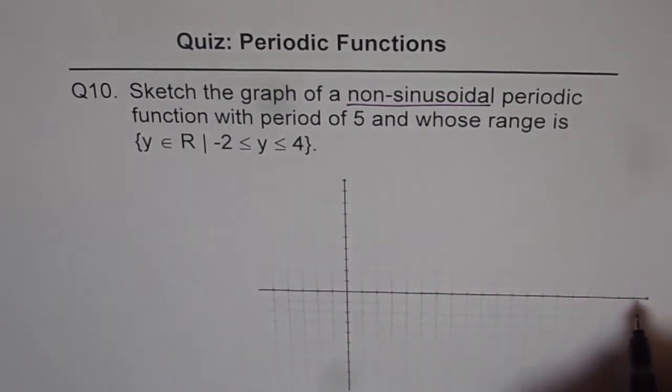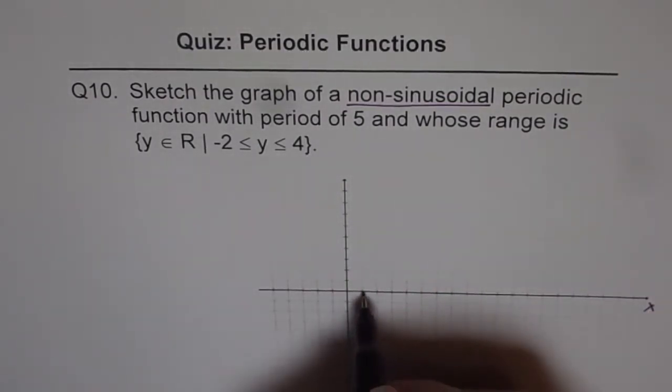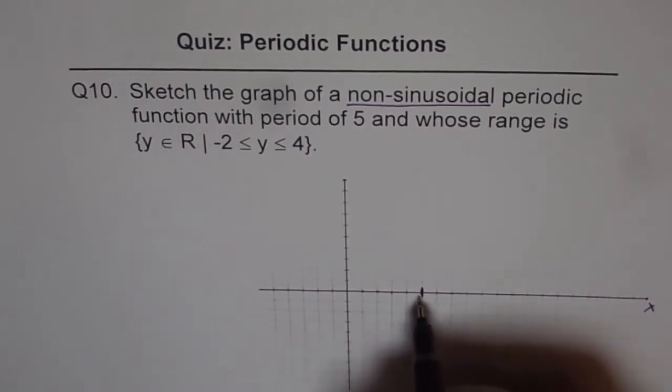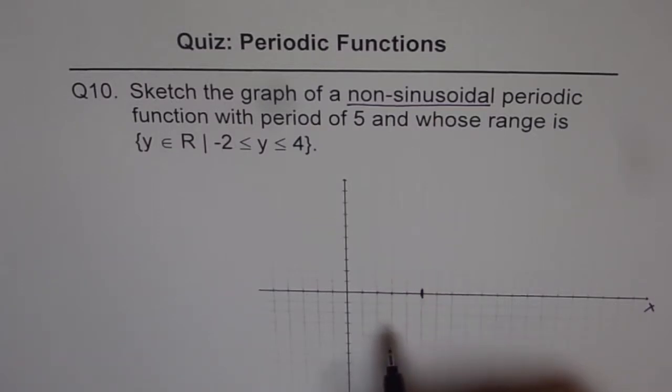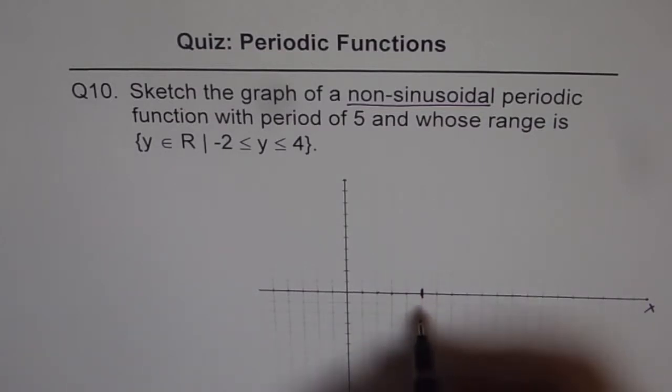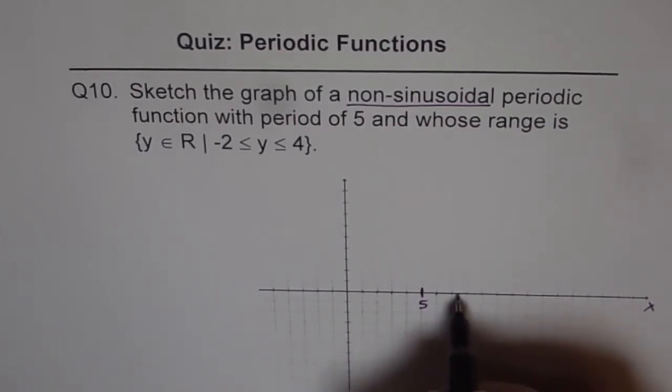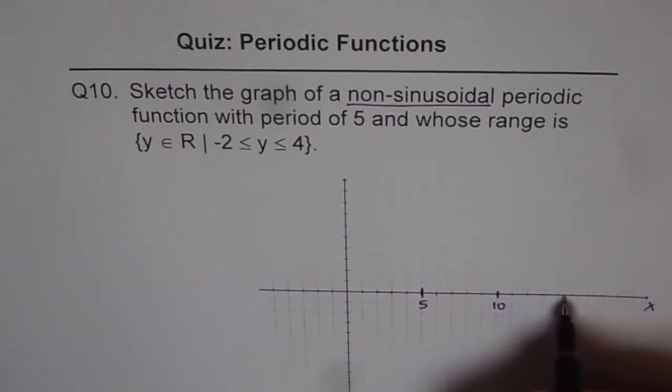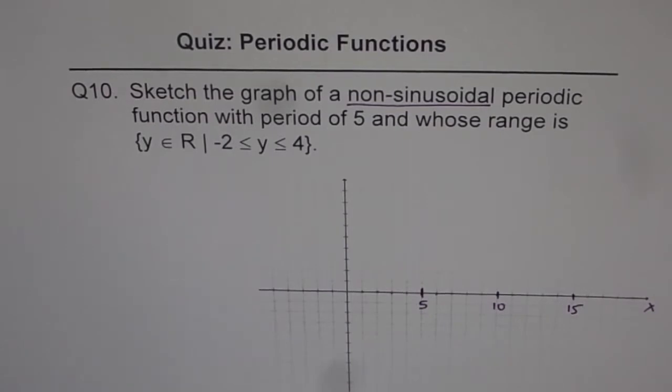So let's have on x-axis 1, 2, 3, 4, 5. So that is how it's going to repeat. Whenever we're trying to draw a sketch of a periodic function, if not specified, we should at least give 3 cycles. So let me say this is 5, 1, 2, 3, 4, 5, 10, 1, 2, 3, 4, 5, 15. So I'll draw 3 cycles.